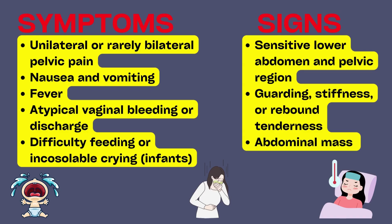We will now see the symptoms and signs. The commonest symptom of ovarian torsion is unilateral, or rarely bilateral, pelvic pain. The pain is sharp, dull, continuous, or intermittent, and it may radiate to the flank, back, or abdomen.